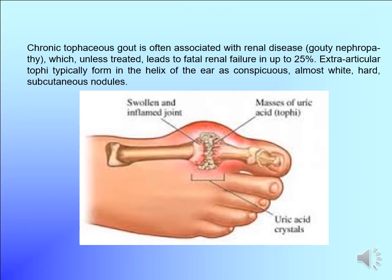Chronic tophaceous gout is often associated with renal disease — gouty nephropathy — which can lead to fatal renal failure in up to 25% of cases. There are extra-articular tophi, typically from the helix of the ear, appearing as hard subcutaneous nodules.